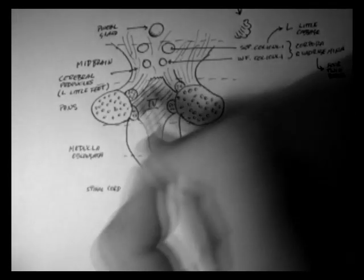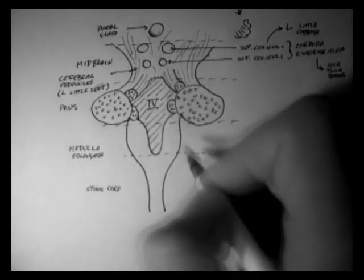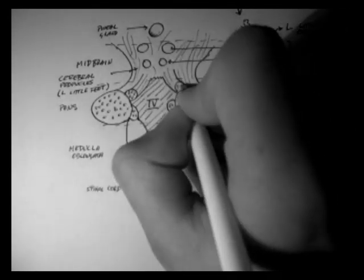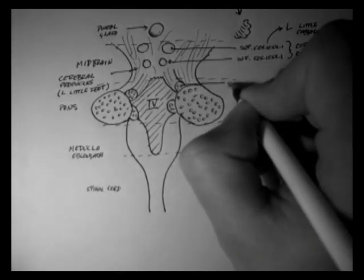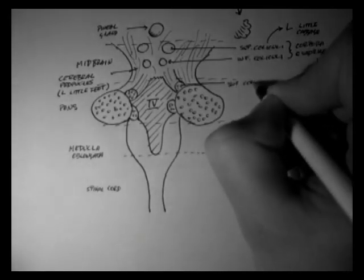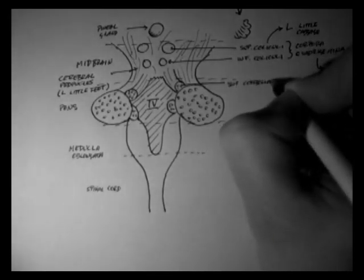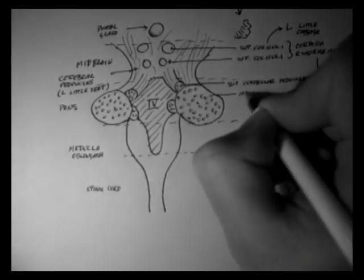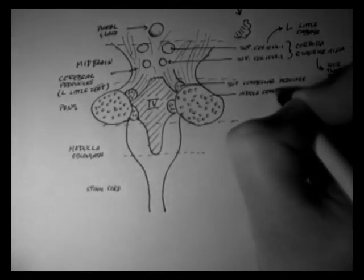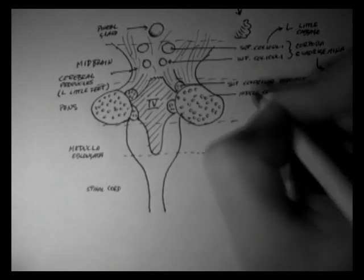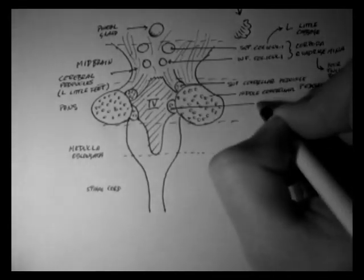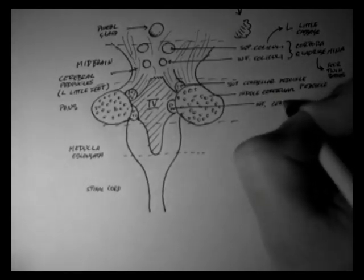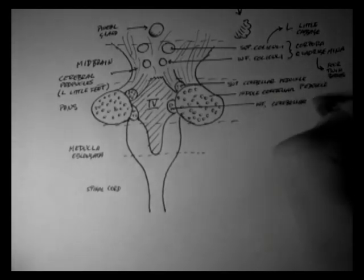So here are the three cerebellar peduncles. Don't confuse those with the cerebral peduncles. They're pretty descriptively named. They're called the superior, middle, and inferior cerebellar peduncles. In this image they've been cut through to remove the cerebellum. Remember that peduncle means little foot, and so these are the little feet of the cerebellum. They're massive white fiber tracts that run through to the cerebellum.